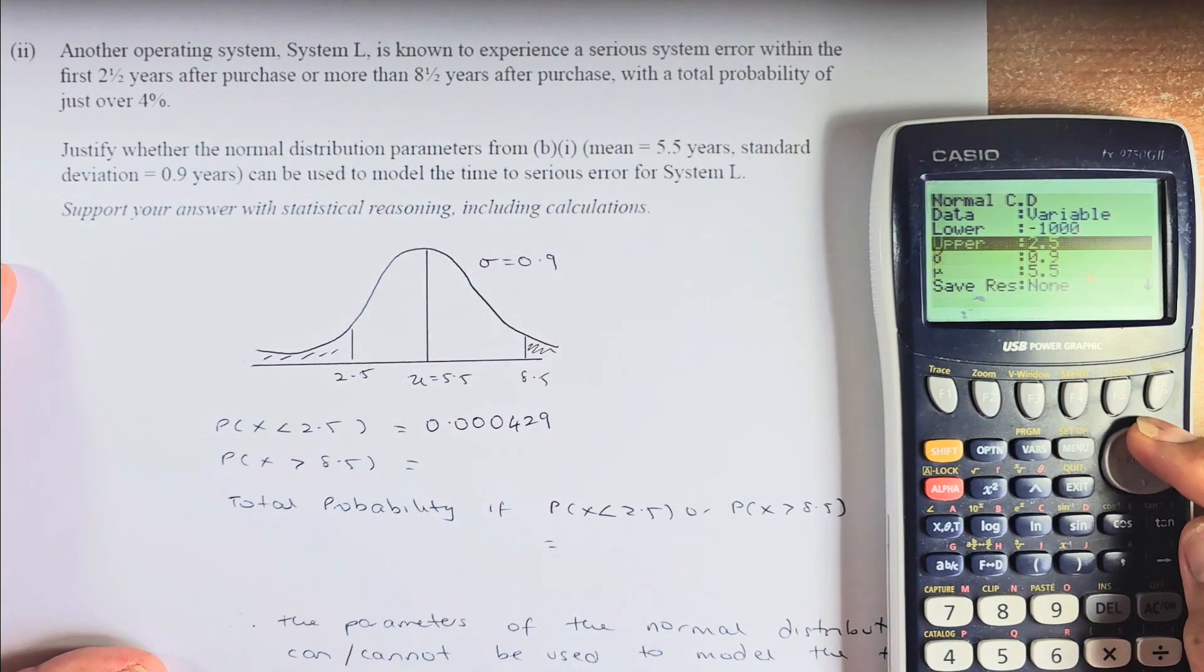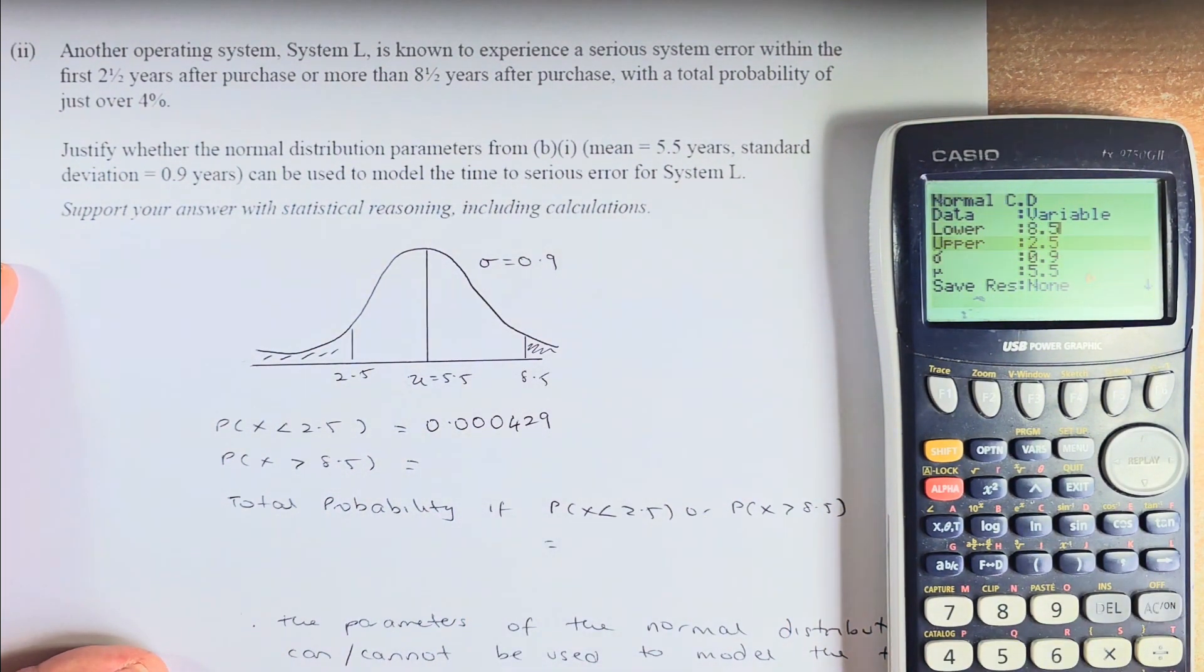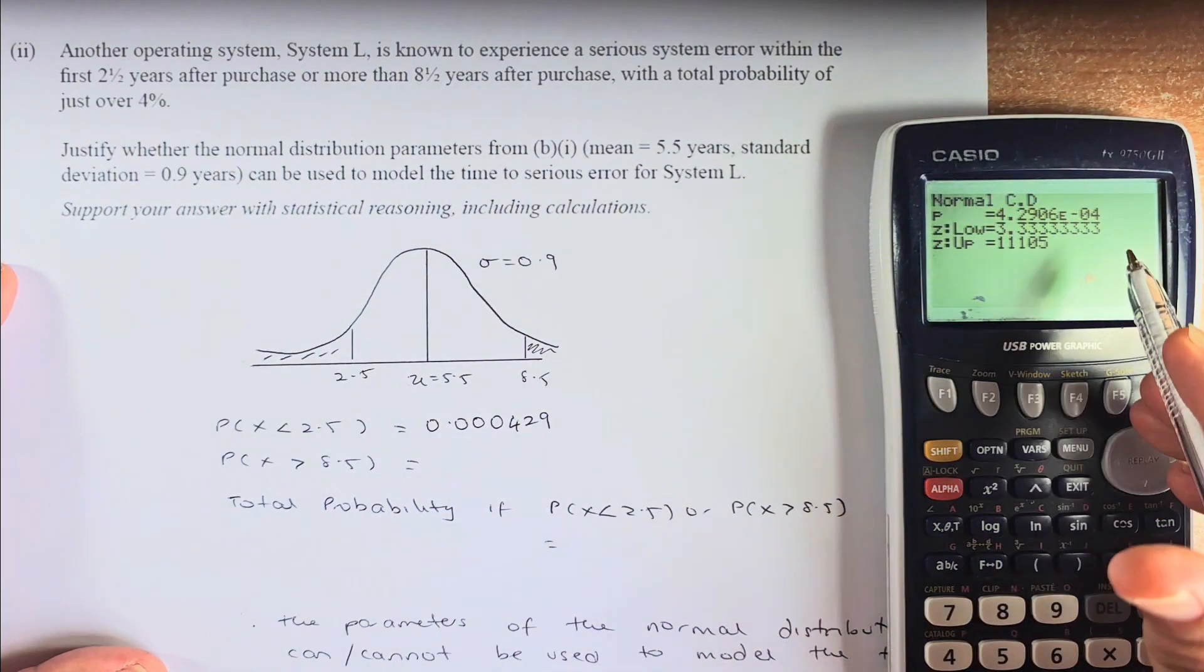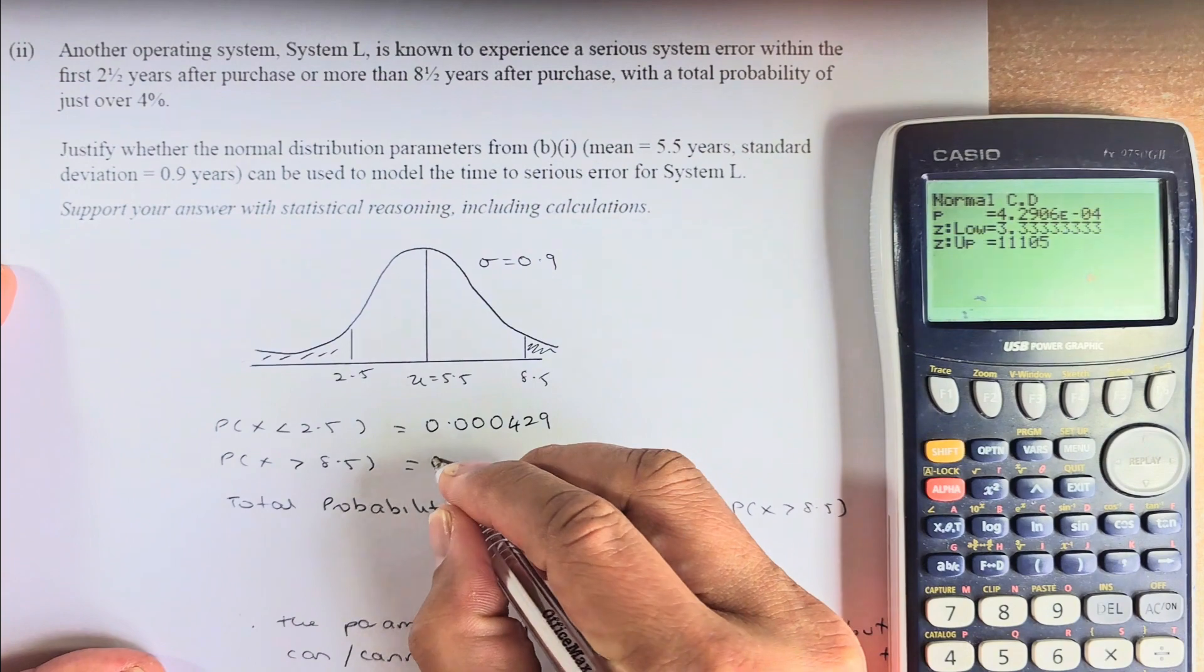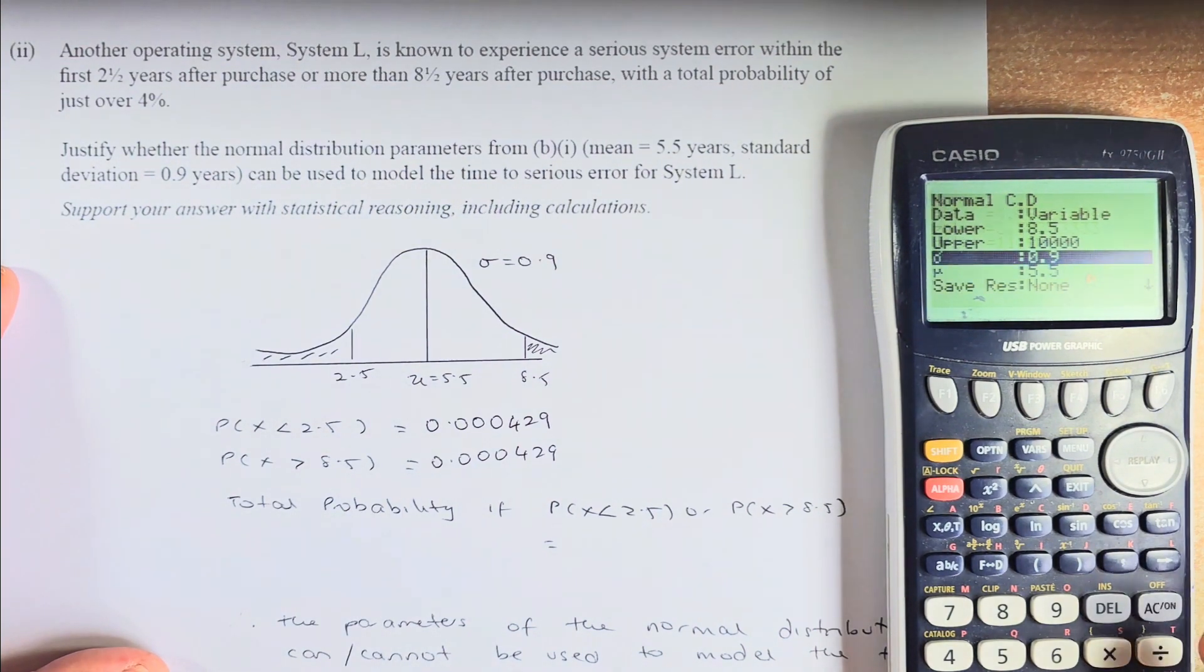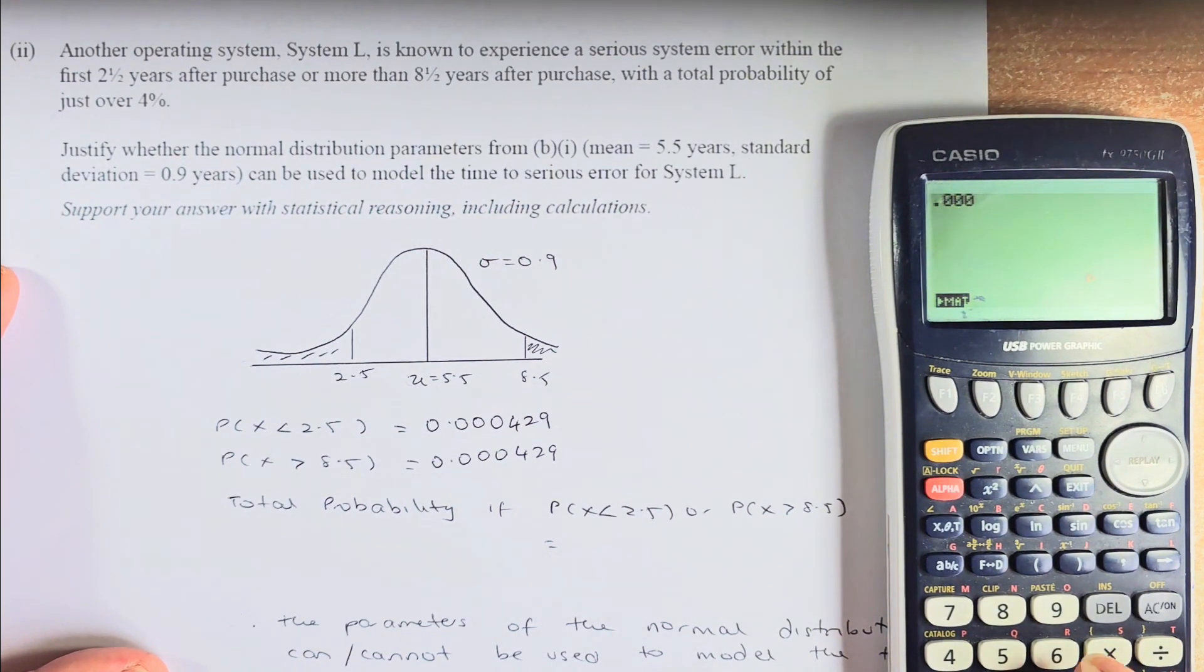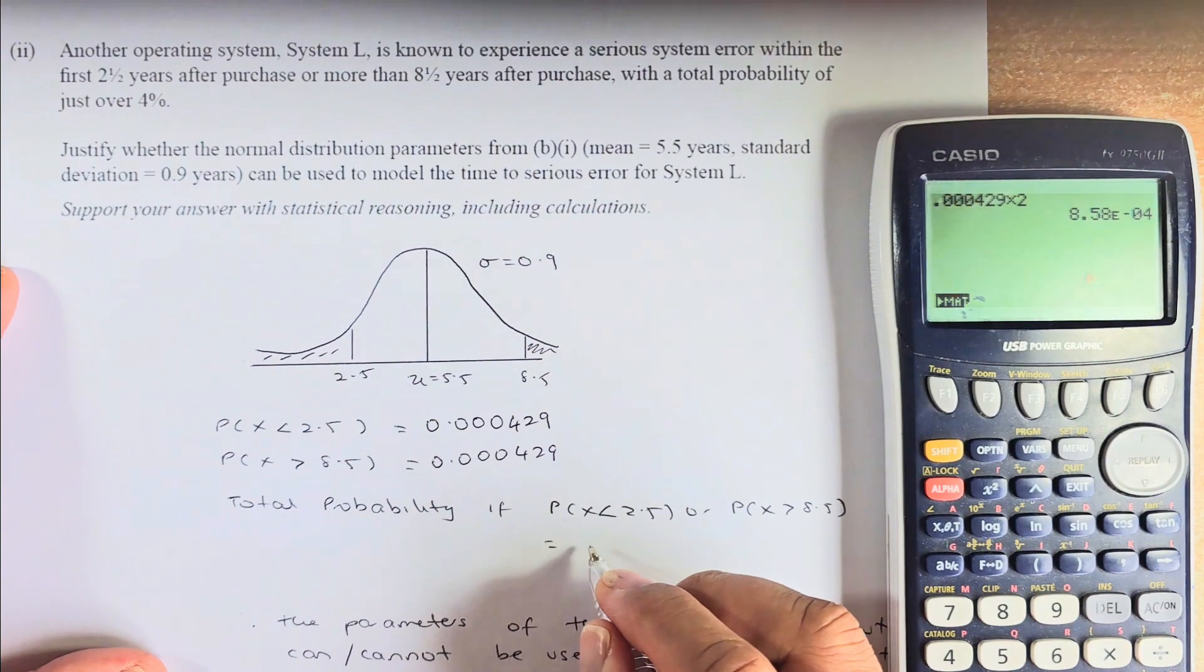So now the lower is going to be 8.5, execute. The upper this time is going to be a big number, 10,000. The sigma and the mean are still the same. Execute. And the answer is the same as the previous one, 0.000429. We're going to execute and 0.000429 times 2, because they are the same number.